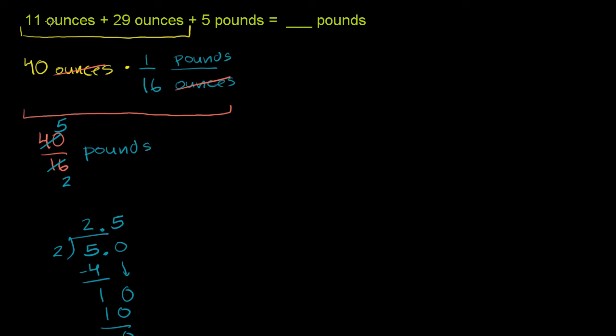So our whole problem, this first part, simplified down to 5 halves pounds, or 2.5 pounds. So the problem becomes 2.5 pounds plus 5 pounds. And 2.5 plus 5 is fairly straightforward. It's 7.5, so this is equal to 7.5 pounds. That's our answer.